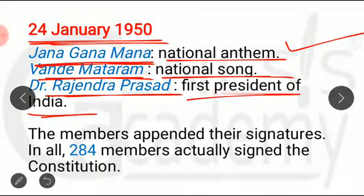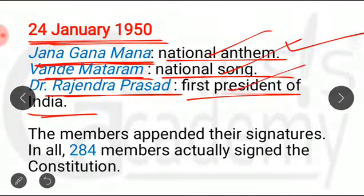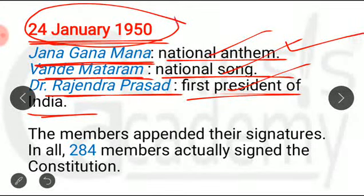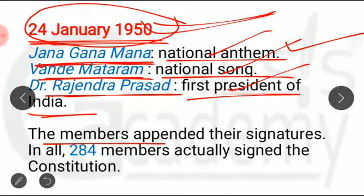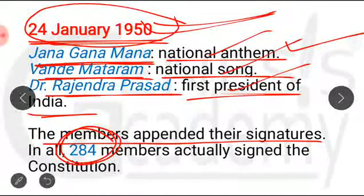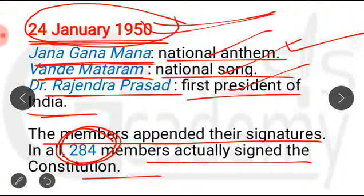You have to remember that the Constituent Assembly's first function was to make the Constitution; second function was that it was a legislative body; third function — it adopted the National Flag; fourth — it adopted the National Anthem; fifth — it adopted the National Song; sixth — it elected the first President of India. These three functions were performed by the Constituent Assembly on 24th January 1950. On this day the members had to append their signatures on the Constitution — 284 members actually signed the Constitution.